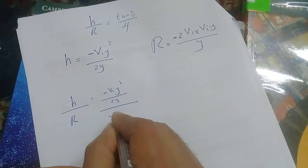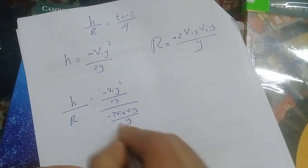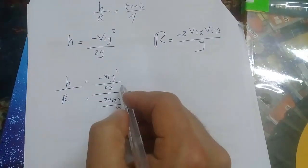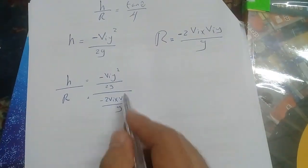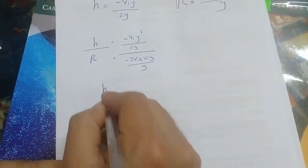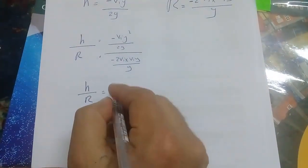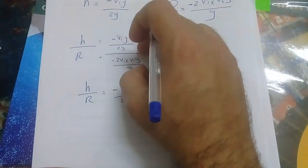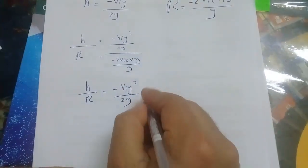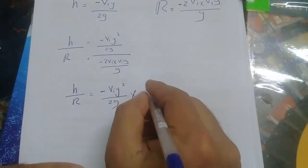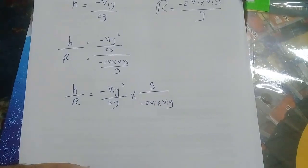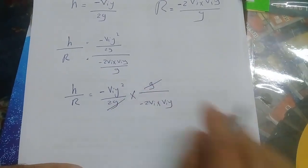By dividing H over R, you have two fractions. H over R equals the first fraction V_iy squared over 2g, and the second fraction will be multiplied after flipping — make flipping: g over negative 2·V_ix·V_iy. G can be cancelled with g.